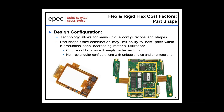From a part shape perspective, the technology allows for many unique configurations and shapes, but not all shapes allow for best utilization of materials. The part shape and size combination may limit the ability to nest parts within the production panel. Designs that are circular or U-shaped with large empty sections result in wasted material, which increases unit cost. The images shown here illustrate this well — one unit has a large empty section in the middle, and the rigid flex has a unique configuration that limits how individual parts can be packaged into the production panel.